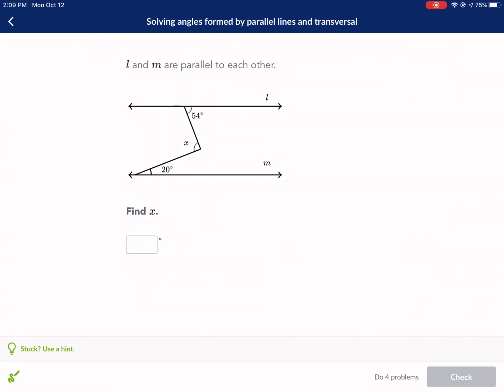Welcome everyone to a Khan Academy tutorial. Today we're doing solving angles formed by parallel lines and transversal. We're going to jump right into this first question.